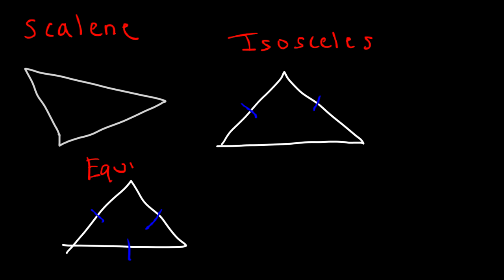An equilateral triangle is also known as an equiangular triangle because all angles are congruent as well. Whenever the sides are congruent, the angles opposite to those sides are equal to each other as well.